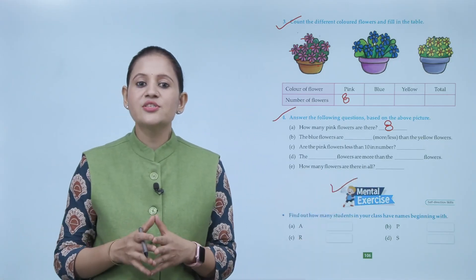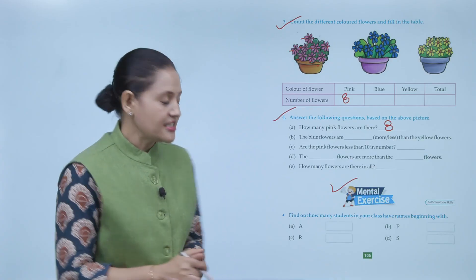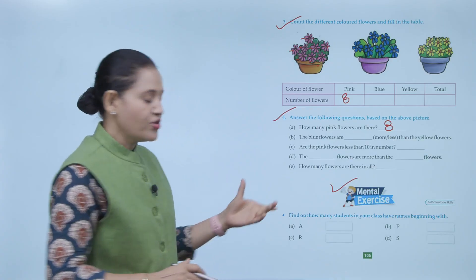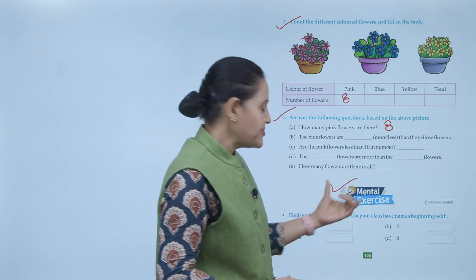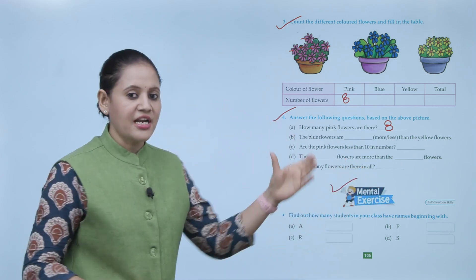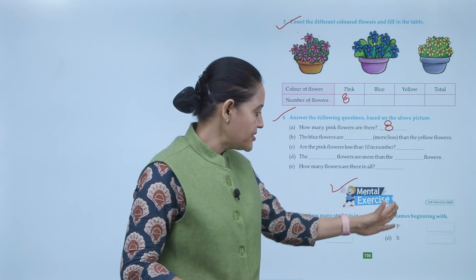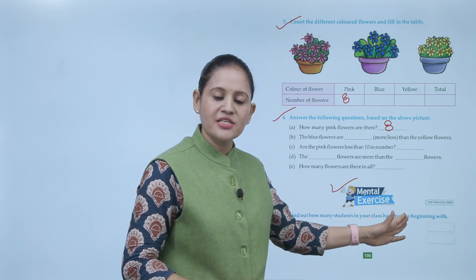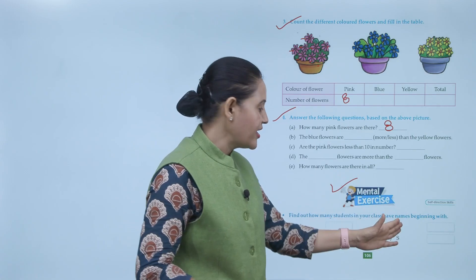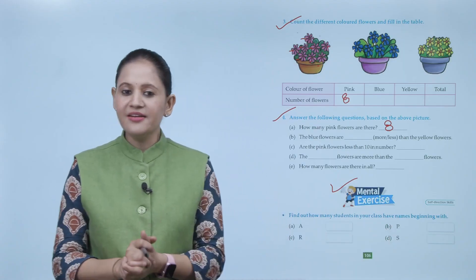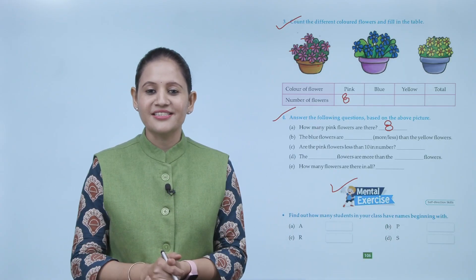Find out how many students in your class have names beginning with the letter A. Count and write the number. Also find how many names start with P and how many students' names start with S. Write the numbers accordingly. This ends the chapter — I hope you understood it well. Now you have to practice it.